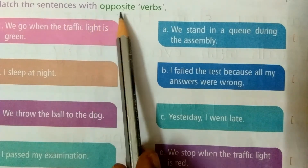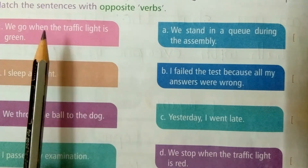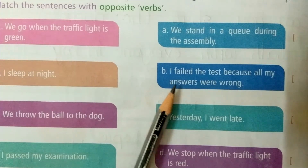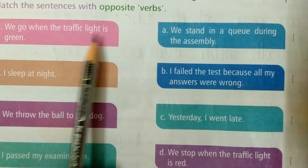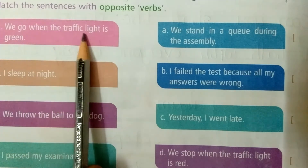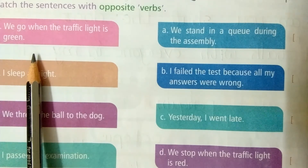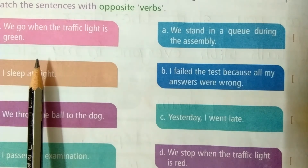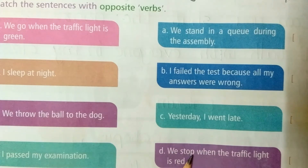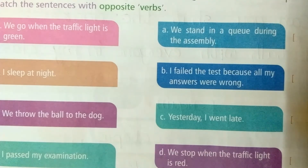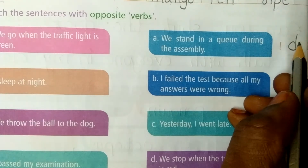Now, match the sentences with opposite verbs. On the left side, some sentences are given. We will match each sentence to another sentence that uses the opposite verb. First sentence: 'We go when the traffic light is green.' The opposite verb sentence is: 'We stop when the traffic light is red.' That is option D. Write D in the first blank.